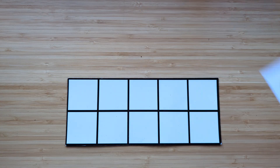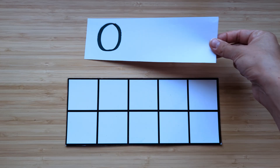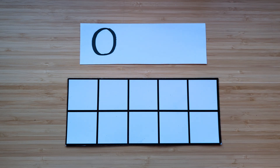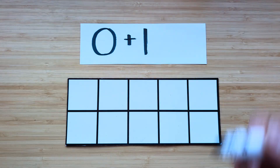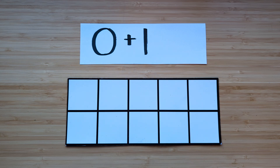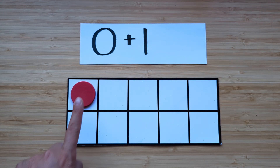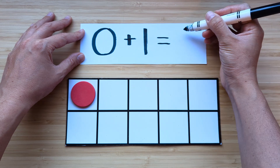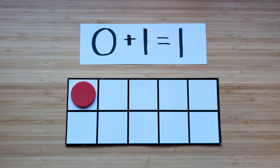All right, go ahead and clear off your boards. Okay, this is a tricky one — you ready? Make the number zero. You should have nothing on your tens frame. What's one more than zero? Let's count. One. One more than zero is one. Good job.